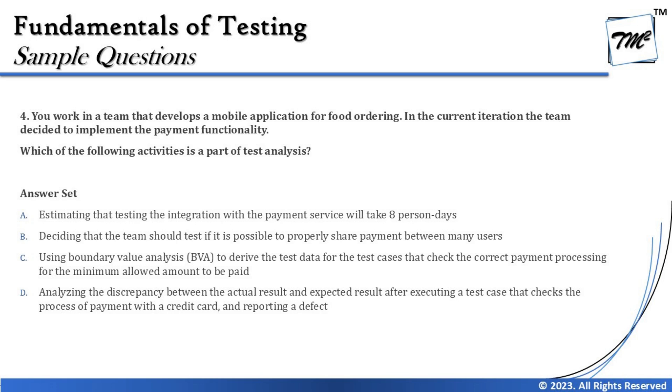Option B — 'deciding that the team should test if it is possible to properly share payment between many users' — means that the workload can be divided among team members by identifying different test conditions. As part of test analysis, we identify different parts of the test conditions and distribute the load among team members, which aligns with agile team collaboration.